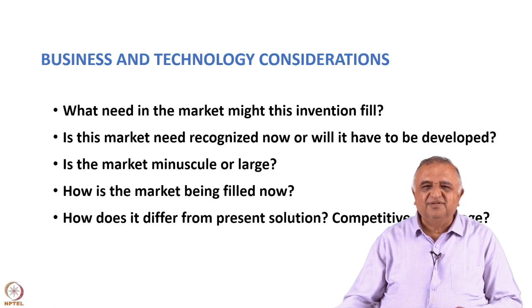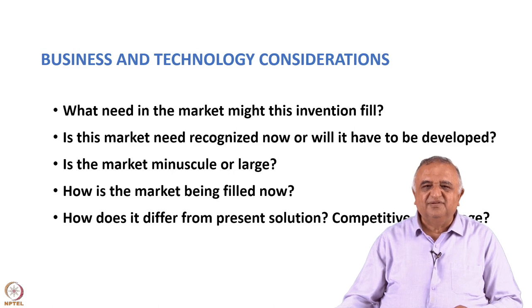We have a new invention. That invention must satisfy a certain need — it must fill some unmet need. What is that need? Has that need been recognized by the customer, or will we have to generate a market for it? Very often there are certain latent needs which consumers have not articulated. The example I would like to give is the Polaroid instant camera. Mr. Land, who developed that camera, had a small daughter.